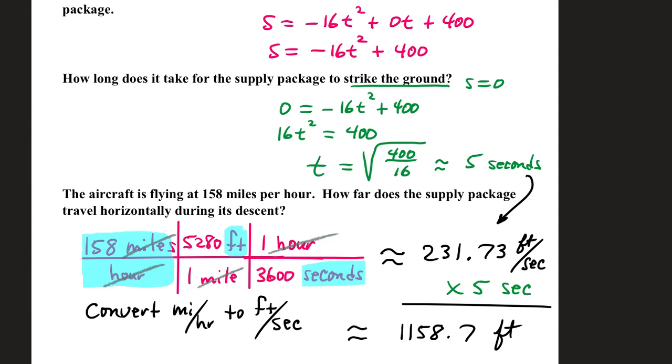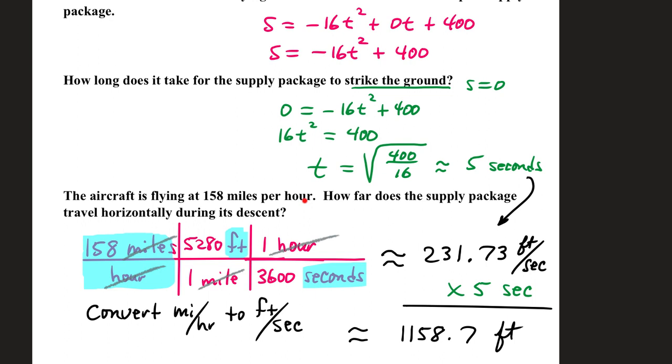The aircraft is flying at 158 miles per hour. How far does the supply package travel horizontally during its descent? We know it takes about 5 seconds to hit the ground. Our position function is based on feet per second. The aircraft is given as miles per hour. 158 miles per hour can be converted to feet per second: 5,280 feet in a mile and 3,600 seconds in one hour.